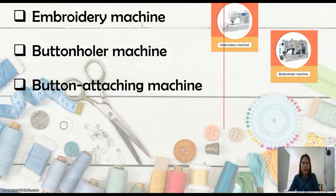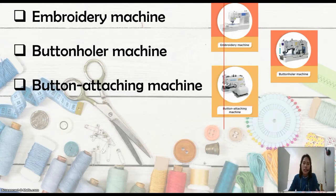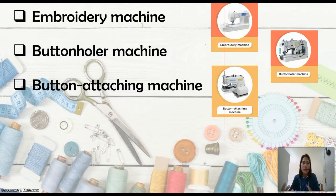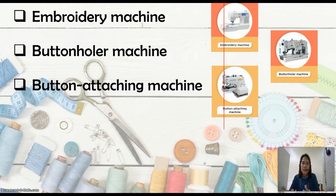Next is the button attaching machine. If there is a machine for sewing buttonholes, there is also one for attaching buttons. In an industrial company, production demands are large and you cannot sew buttons by hand. Especially when one garment has five to six buttons — it won't be manageable by hand. So to speed up production, we use the button attaching machine to make attaching buttons easier.